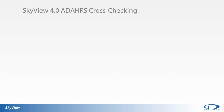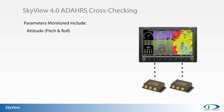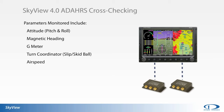In systems with dual ADHARS, SkyView 4.0 firmware will monitor the data coming from each ADHARS and warn the pilot if a disagreement occurs. SkyView performs this cross-check on pitch and roll data, magnetic headings, g-meter readings, turn coordinator data, as well as airspeed and altitude values.